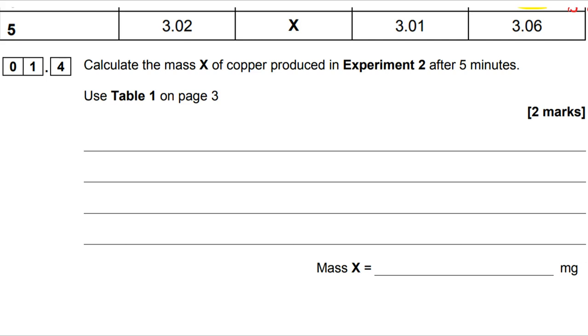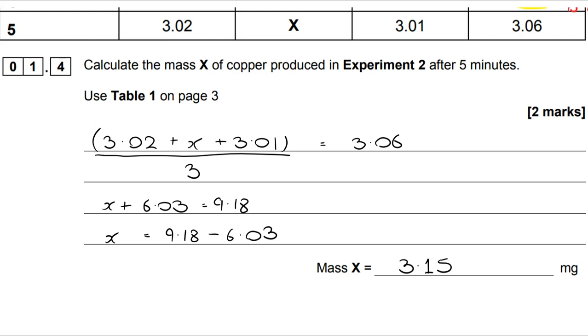I'm doing a mean calculation, but in a slightly different way, because I know what the average is. 3.02 plus X plus 3.01, all divided by 3, gives you 3.06. If I rearrange that to make X the subject, you can see that X is 9.18 take away 6.03, giving me a value of 3.15.